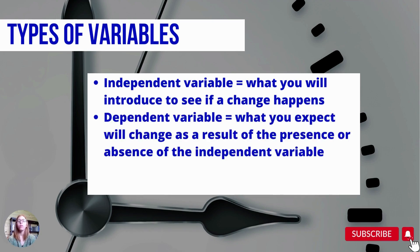Your dependent variable is the thing that you expect to change as a result of the presence or absence of the independent variable. So in this case with a CBT intervention, the presence of that intervention will hopefully change, let's say, someone's depression level.